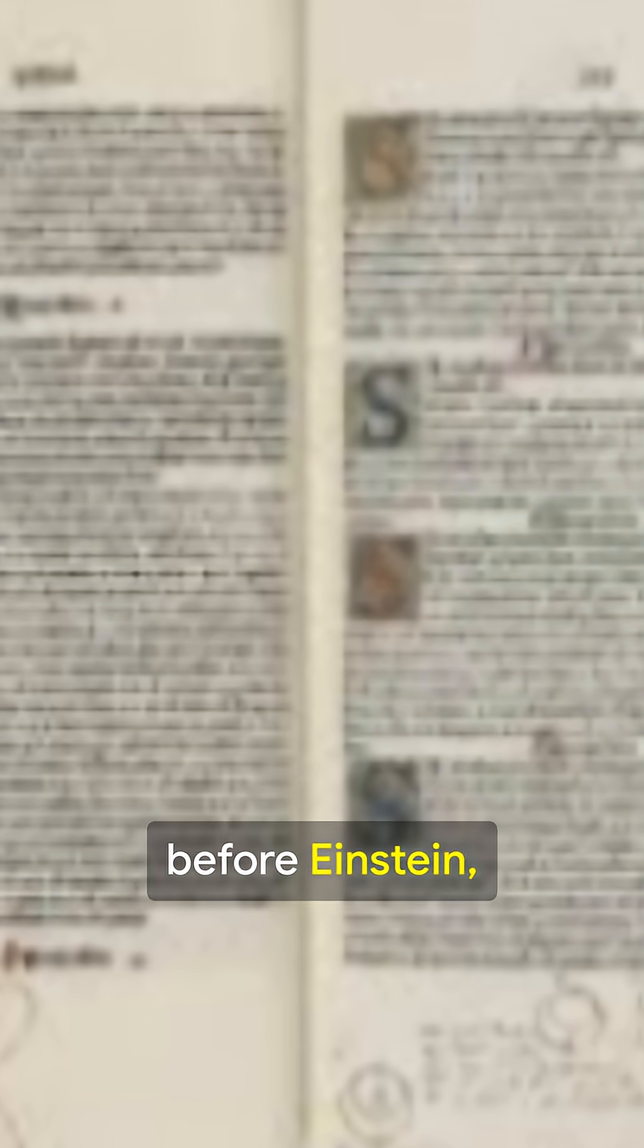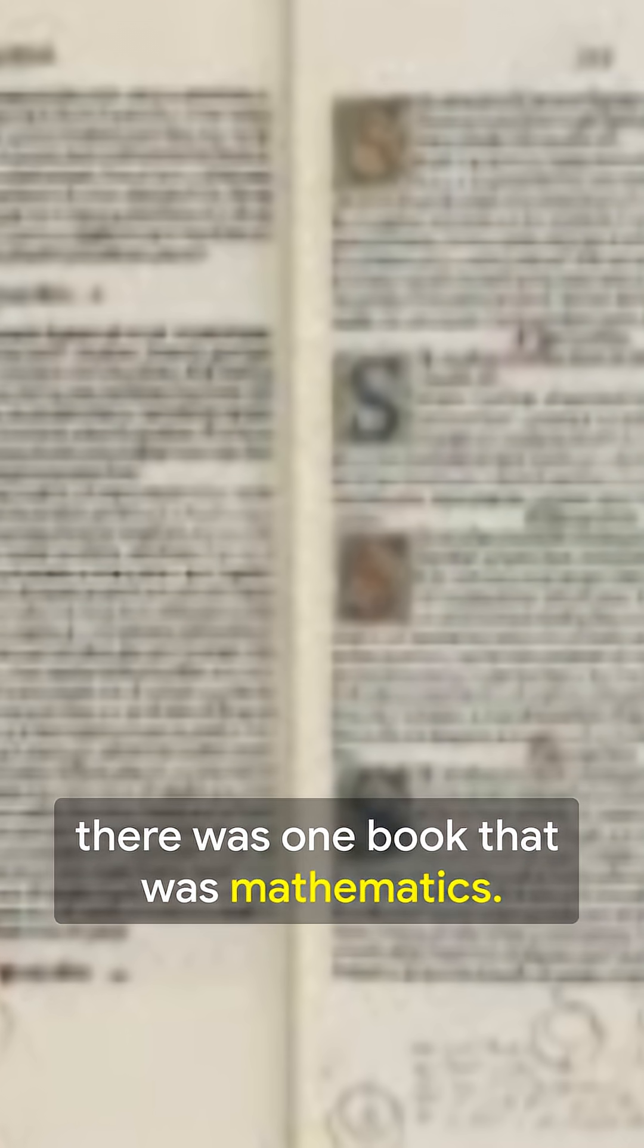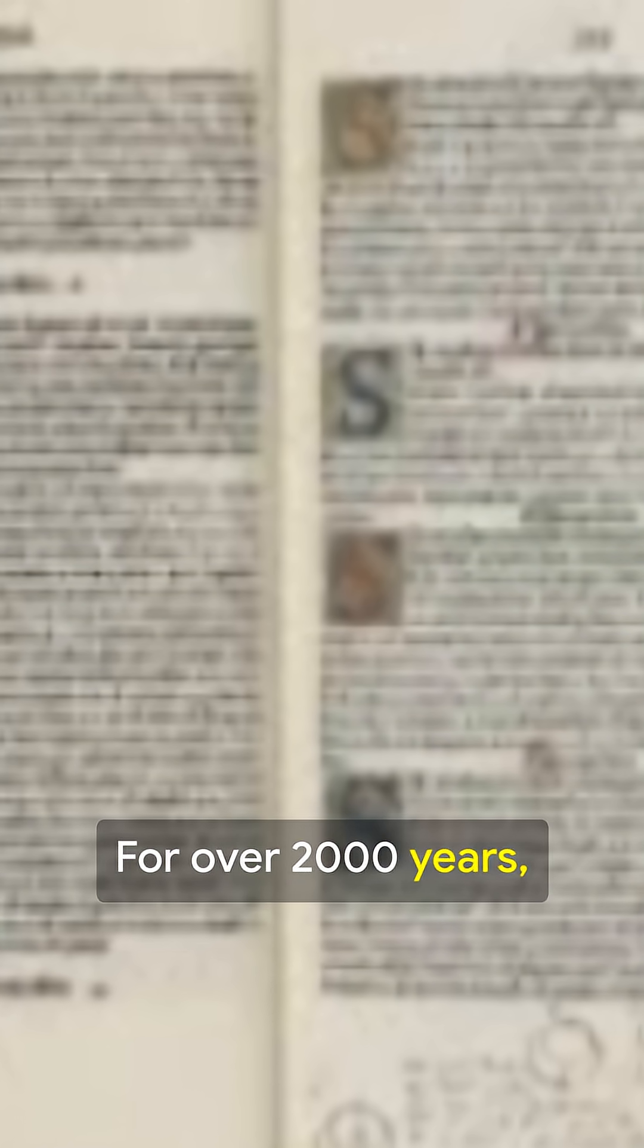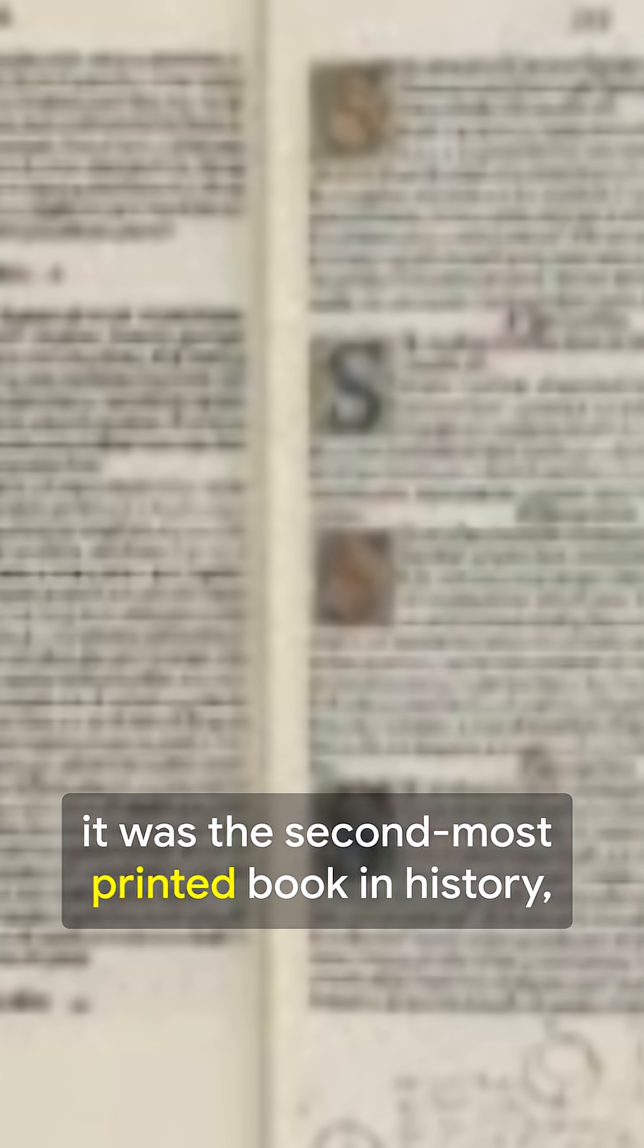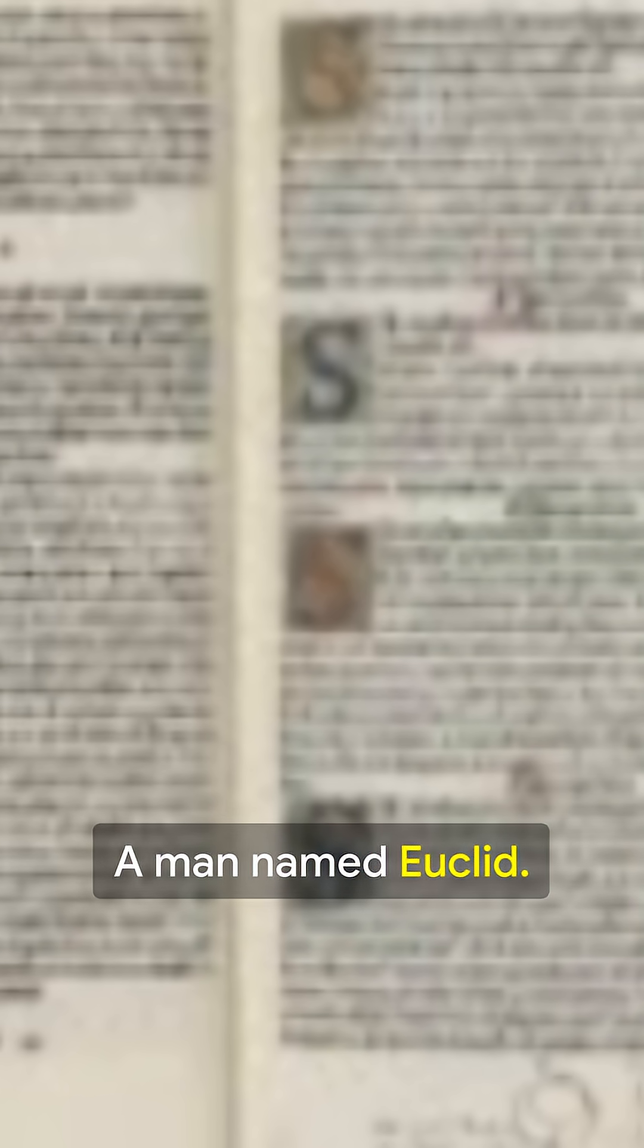Before Newton, before Einstein, there was one book that was mathematics. For over 2,000 years, it was the second most printed book in history, after the Bible. Its author? A man named Euclid.